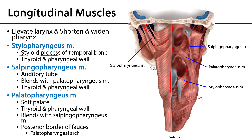There's also a salpingopharyngeus muscle — 'salpinx' means horn, referencing the torus tubarius. The salpingopharyngeus muscle originates on the outer part of the auditory tube, descends, and blends with another muscle called the palatopharyngeus. The two of these come down to insert on the wall of the pharynx and ultimately the thyroid cartilage.